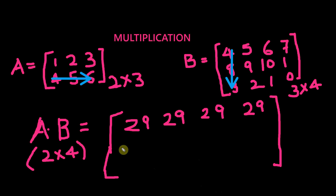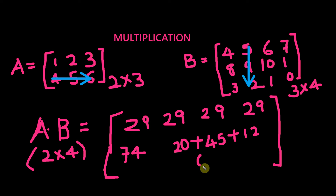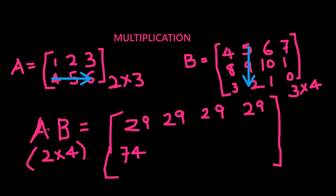Let's find the second row, second column value. For that we need to multiply 4, 5, 6 with 5, 9, 2 in matrix B. So 4×5 is 20, plus 5×9 is 45, plus 6×2 is 12. That sums up to 65 plus 12 equals 77. So we got the second row, second column value as 77.